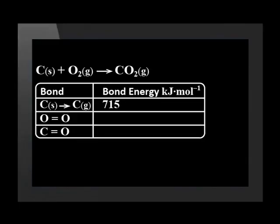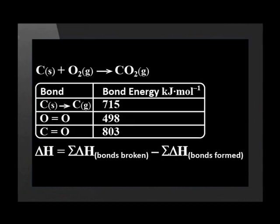Now we use bond energies to calculate the heat of reaction. The information about bond energies is in a table in the series guide. To change carbon solid to carbon gas takes 715 kJ per mole. 498 kJ per mole is needed to break the oxygen double bond, and the formation of a carbon-oxygen double bond releases 803 kJ per mole. Remember, there are two carbon-oxygen double bonds in one carbon dioxide molecule. Here is the formula to calculate the heat of reaction. Try the calculation before you look at the answer. Did you get minus 393 kJ?